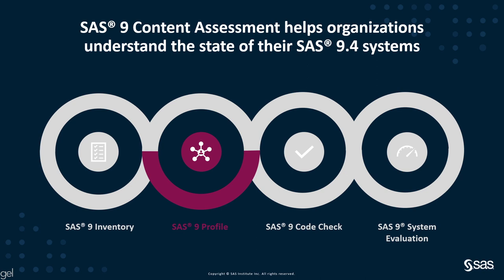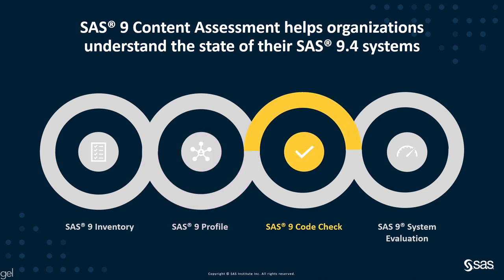SAS 9 Profile analyzes the platform to understand its characteristics and identify details about the features that are used. SAS 9 Code Check assesses SAS programs for compatibility with SAS Viya. And SAS 9 System Evaluation searches for known issues that exist in a SAS 9.4 environment that might cause issues during an in-place upgrade.